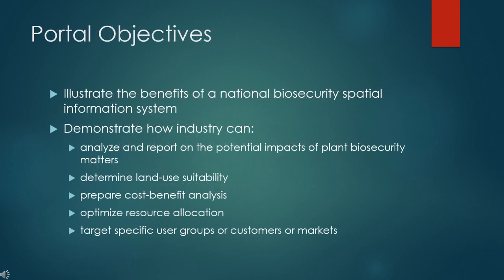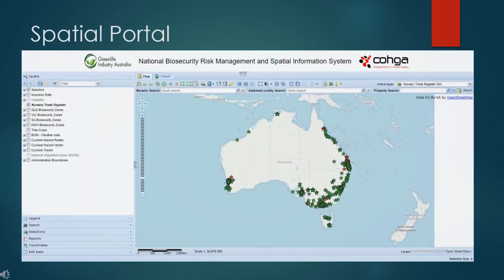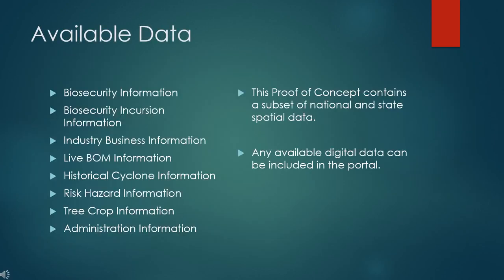The fundamental objective of the portal is to illustrate the benefits of a national biosecurity spatial information system, with the aim of building support for the ongoing development and use of this resource. The spatial portal provides an intuitive map-based interface that allows users to explore and manage a range of relevant data sets. A range of national and state spatial data has been included in this proof of concept spatial portal, but please note that any available digital data can be included if required.